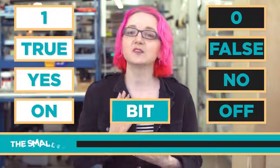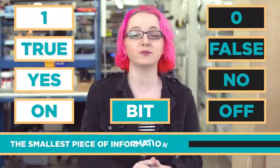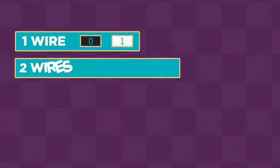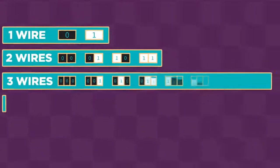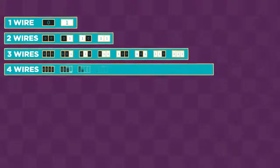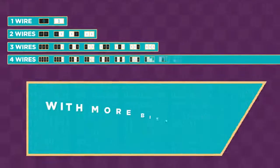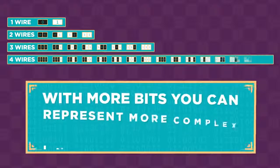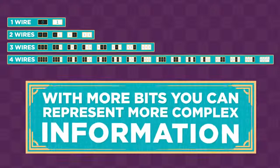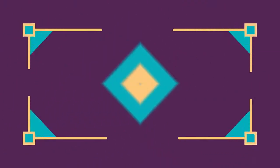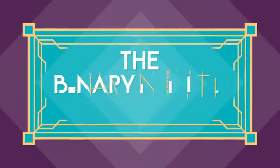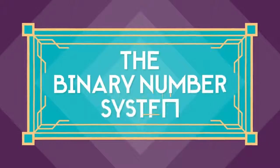If you use more wires, you get more bits — more ones and zeros. With more bits, you can represent more complex information. But to understand that, we need to learn about something called the binary number system.